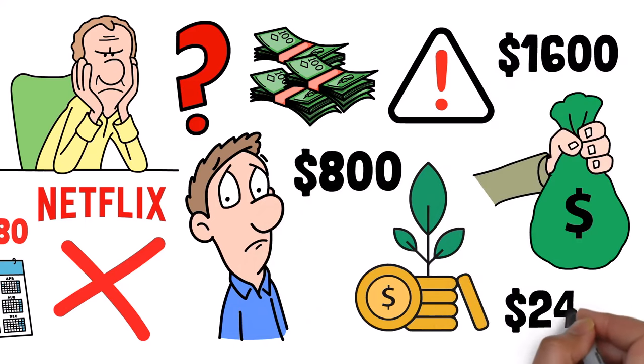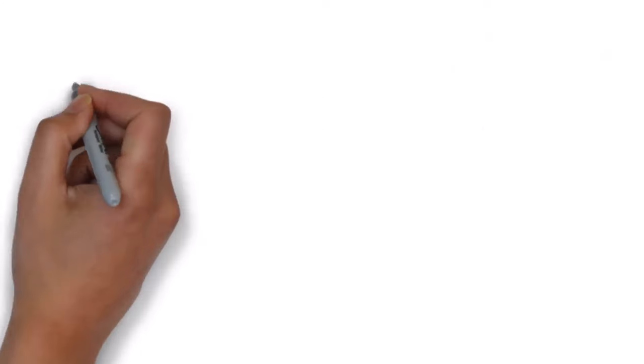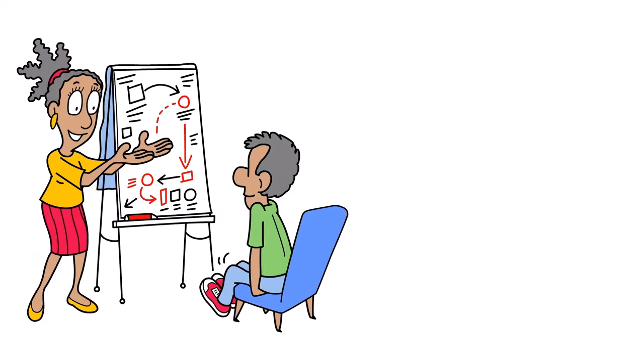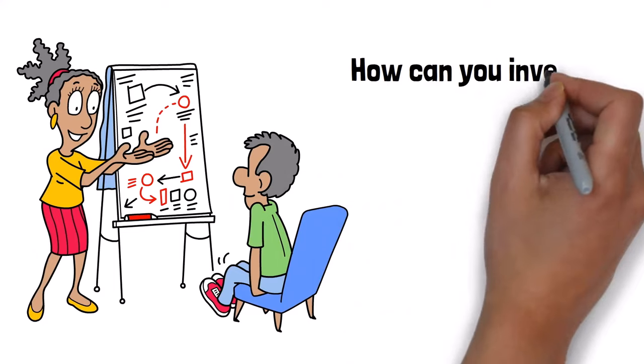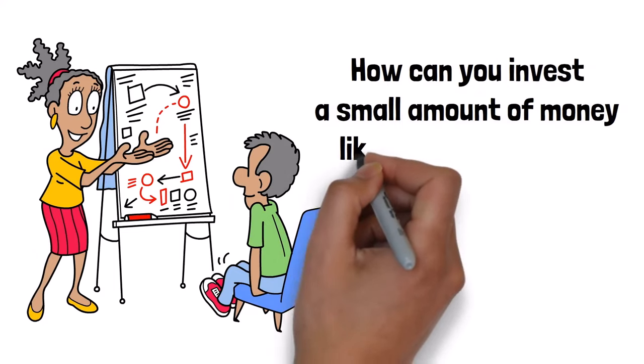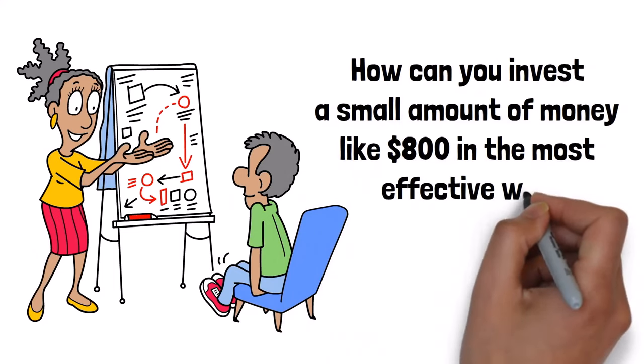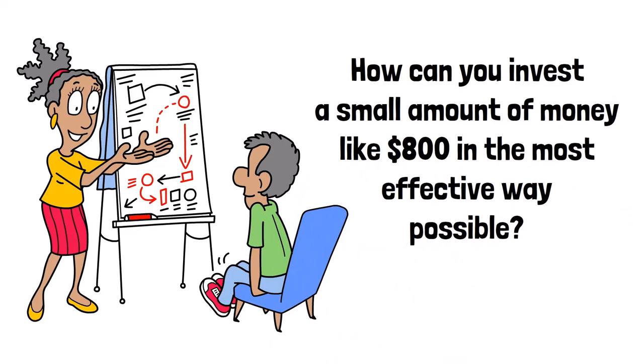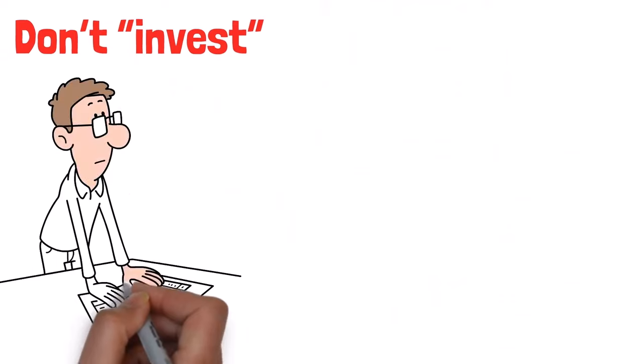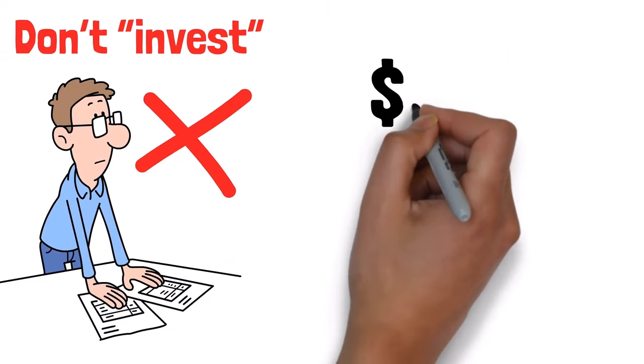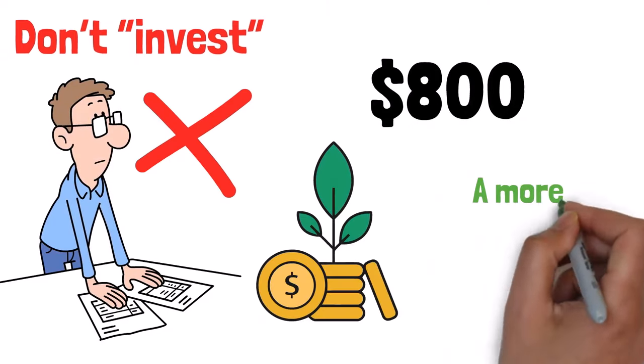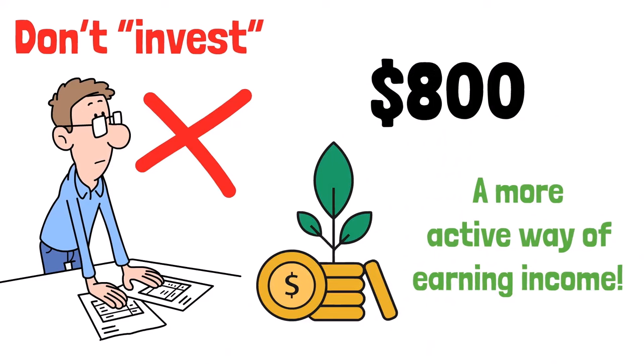So how much do you really think it will change your life? Hopefully, these examples have opened your eyes, and you can see why these investment methods are pretty dumb if you're starting with a small one-time investment of $800. Even if you doubled or tripled this amount to $2,400, the numbers are still underwhelming. So let's come back to the question that we are analyzing. How can you invest a small amount of money like $800 in the most effective way possible? The answer is simple. Don't invest. At least, not in the way you're thinking about investing.